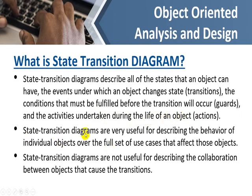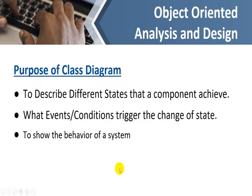State transition diagrams are very useful for describing the behavior of individual objects over the full set of use cases that affect those objects. However, state transition diagrams are not useful for describing the collaboration between objects that causes the transition. The purpose is to describe different states of a component, what event or condition triggers the change of state, and to show the behavior of a system.